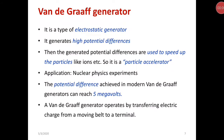The Van de Graaff generator is a type of electrostatic generator. It generates high potential differences, which are used to accelerate particles like ions. It is a particle accelerator. Its application is in nuclear physics experiments. The potential difference achieved in modern Van de Graaff generators can reach 5 megavolts. It operates by transferring electric charge from a moving belt to a terminal.